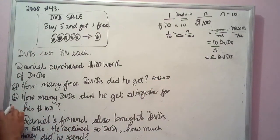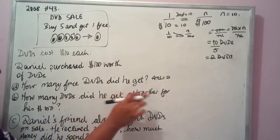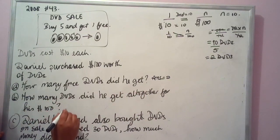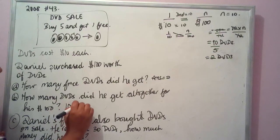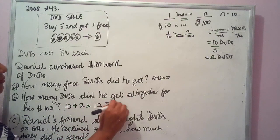Part B: How many DVDs did he get altogether? He got 10 purchased plus 2 free, which equals 12 DVDs.